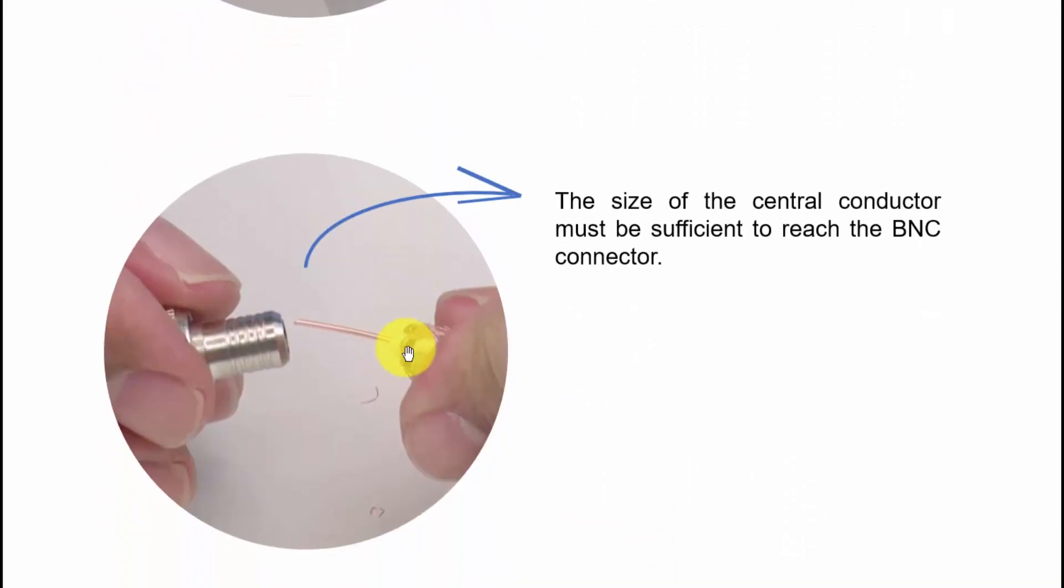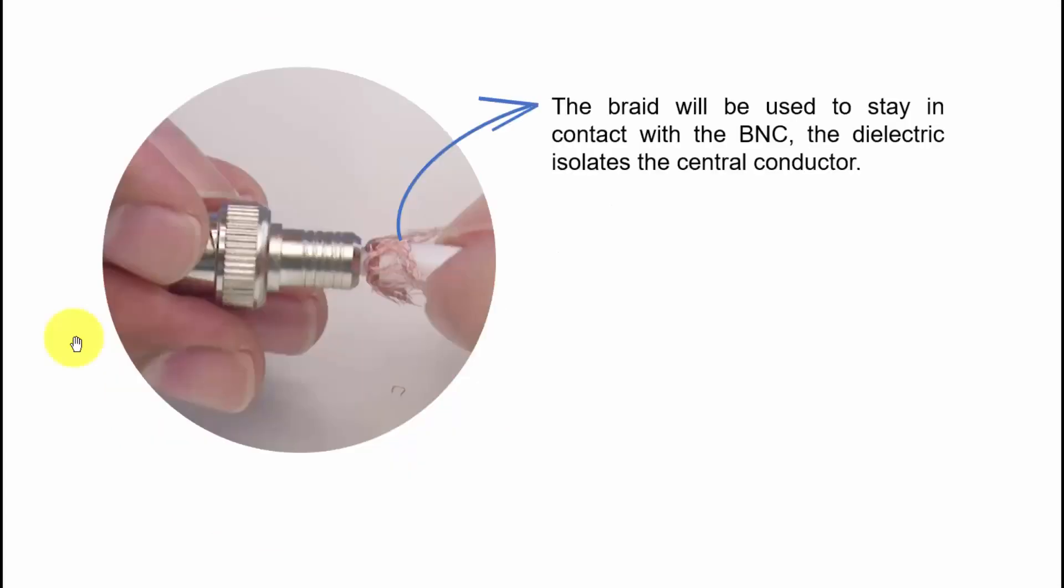As you can see here, there is a little bit of dielectric here that separates the central conductor from the braid. Then you're going to insert the connector just like this, and then you just push the connector. Be careful to not touch the braids with the conductor. The conductor must be inside of the connector. There is no braid touching the conductor. The braid is going to touch the connector in the external part.